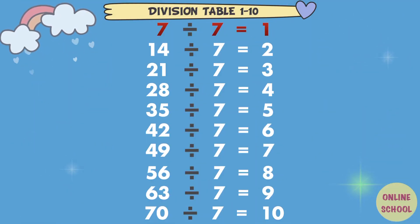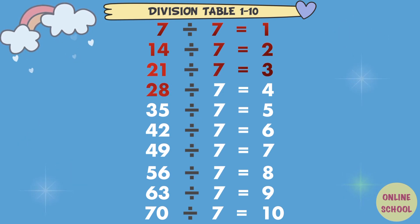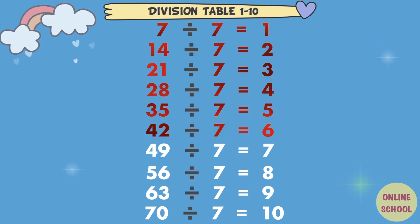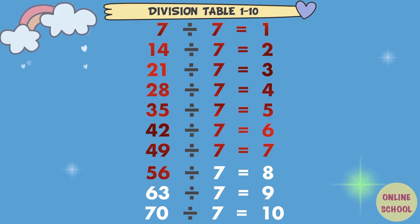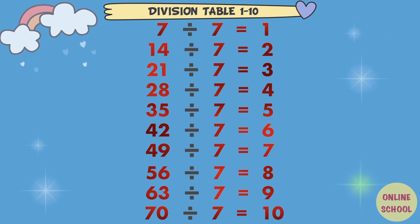7 divided by 7 equals 1. 14 divided by 7 equals 2. 21 divided by 7 equals 3. 28 divided by 7 equals 4. 35 divided by 7 equals 5. 42 divided by 7 equals 6. 49 divided by 7 equals 7. 56 divided by 7 equals 8. 63 divided by 7 equals 9. 70 divided by 7 equals 10. Divided by 8.